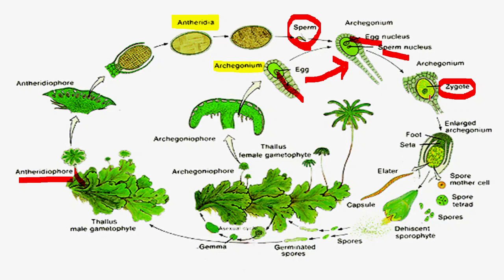The male gamete passes through the cells to ultimately fuse with the egg. This fusion results in the zygote. The zygote is present upon the archegonium and is diploid. This diploid structure starts growing within the plant. Mitotic cell division takes place, resulting in the production of spores. The spores are released, and each spore develops into a new plant body — the gametophyte — thus completing the life cycle.